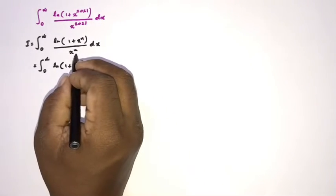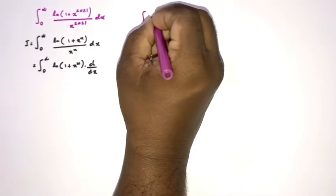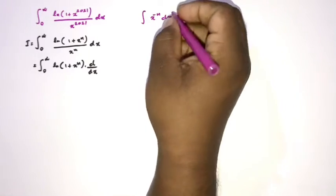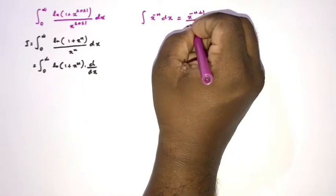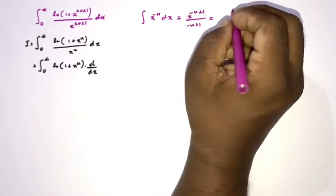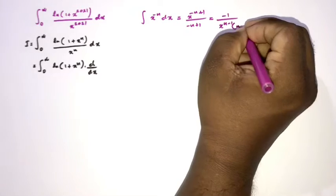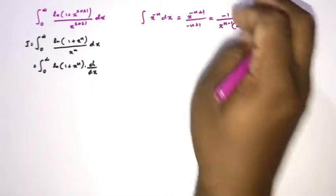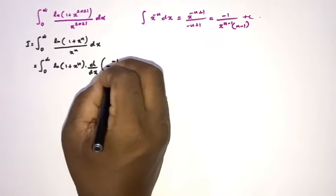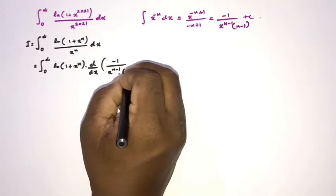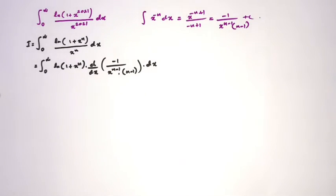We integrate x^(-n) dx. We know that gives x^(-n+1) over (-n+1), which we can rearrange as -1 over [x^(n-1) · (n-1)] plus a constant. So we write -1 over [x^(n-1) · (n-1)] as the antiderivative.